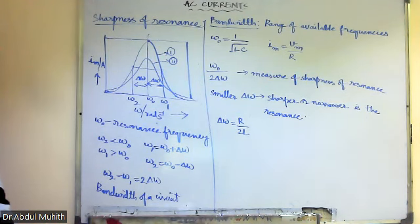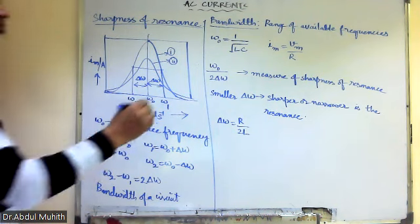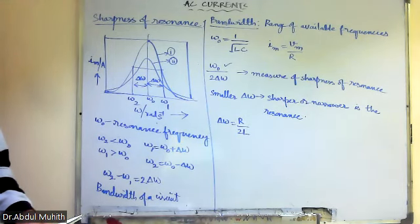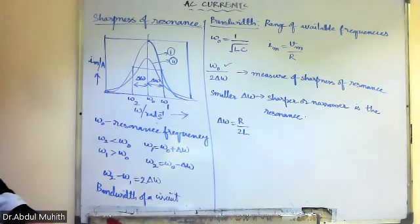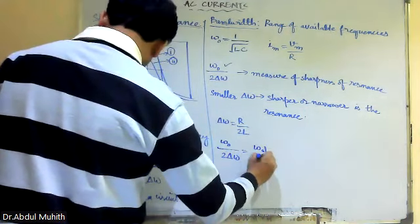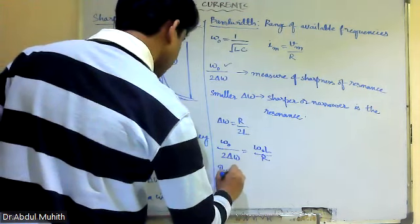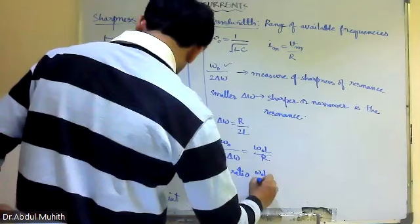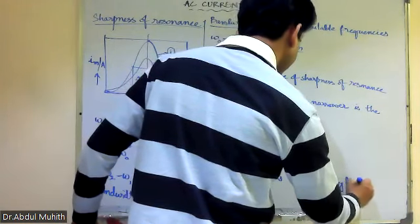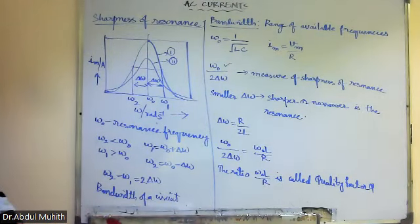We will equate both of them. The sharpness of resonance is Omega zero by two Delta Omega, which equals Omega zero L by R. The ratio Omega zero L by R is called the quality factor Q.